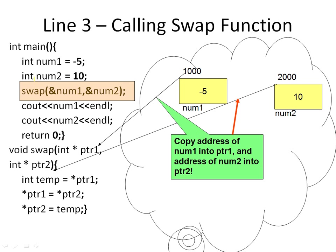Then I call the swap function and pass to it the address of num1 and the address of num2. When functions expect pointers, you can pass either the pointers or the addresses of variables, because pointers store addresses — so if you pass the address, it will get copied into the respective pointers. So once we make this function call, address 1000 — which is for num1 — will get copied into ptr1, and address 2000 — which is the address of num2 — will get copied into ptr2.